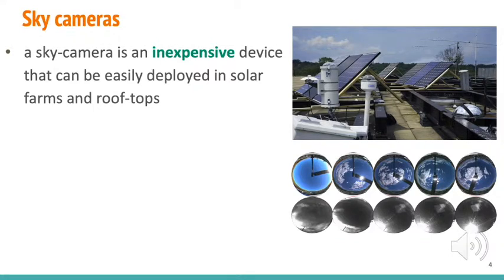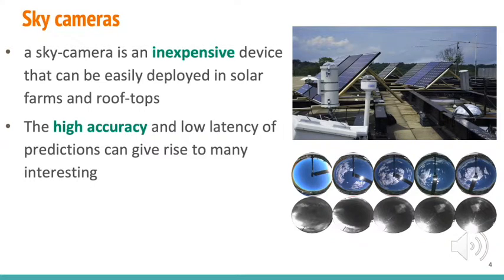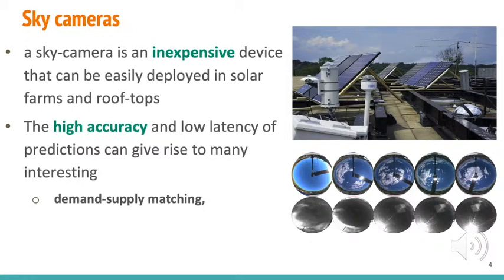A sky camera is an upward-facing camera with a wide-angle lens. As seen in images to your right, they are inexpensive devices that can easily be deployed in solar farms and rooftops. The high accuracy and low latency of predictions from sky cameras leads to interesting applications in supply and demand matching, energy storage optimization, and predictive maintenance solutions.